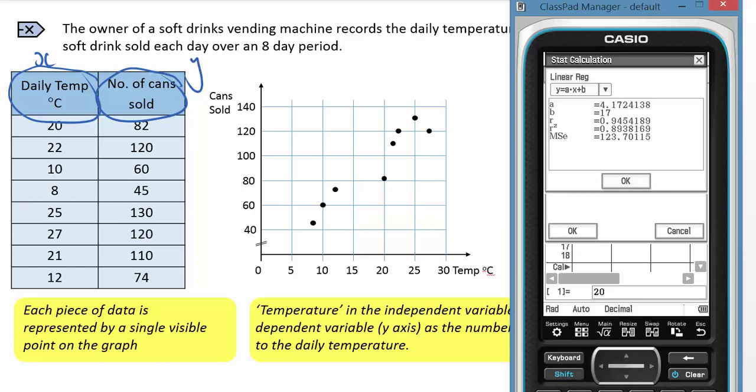And then I've got the equation y is equal to 4.17x plus 17. Now I'll just pause the video and we'll record that.